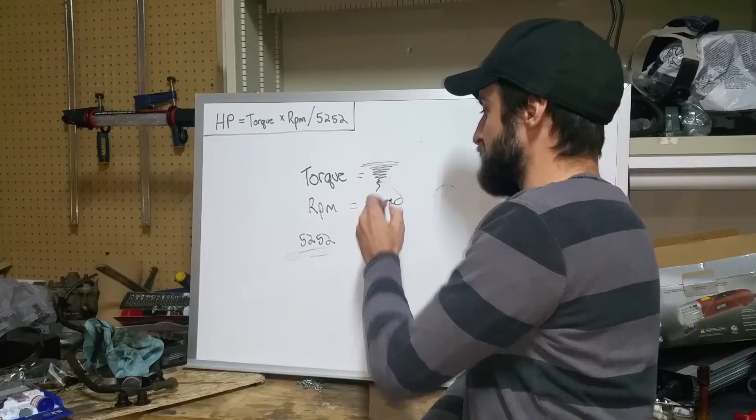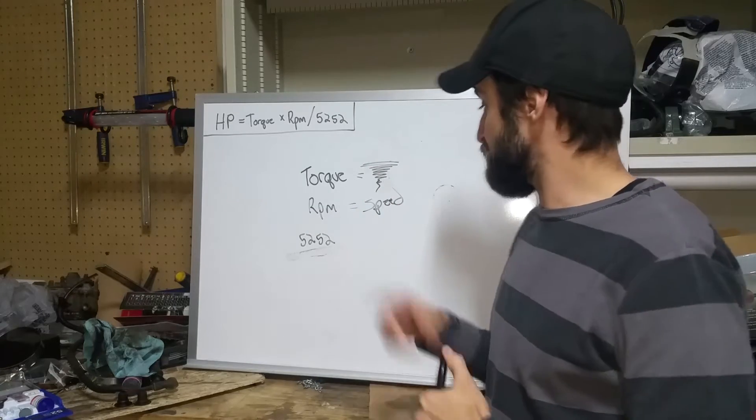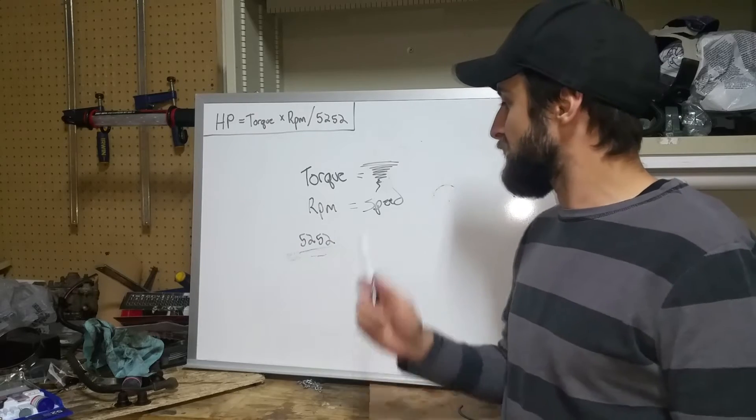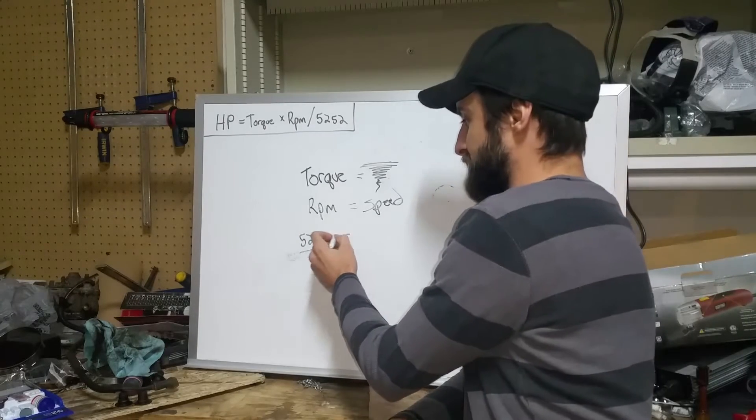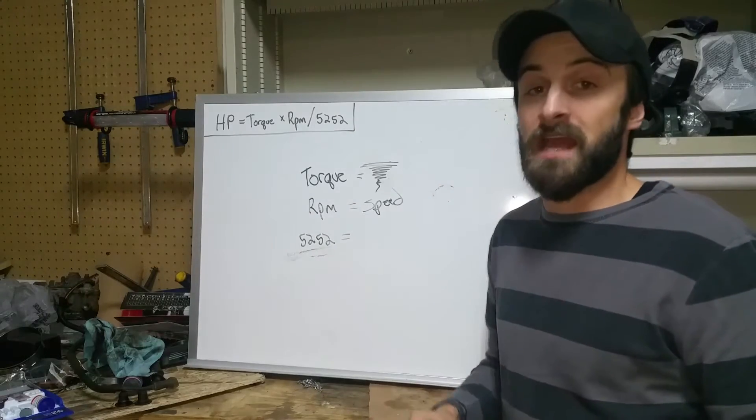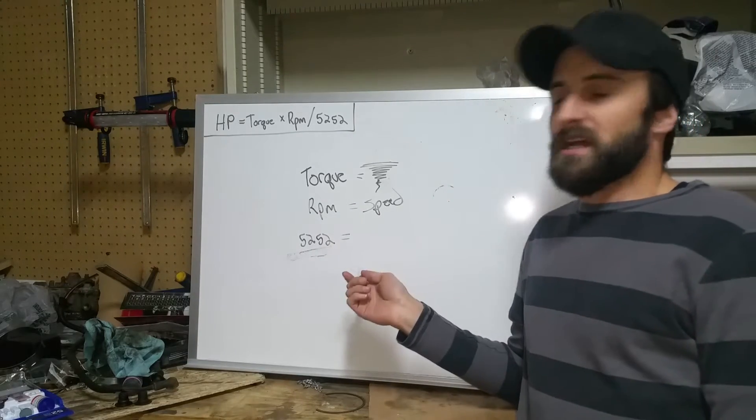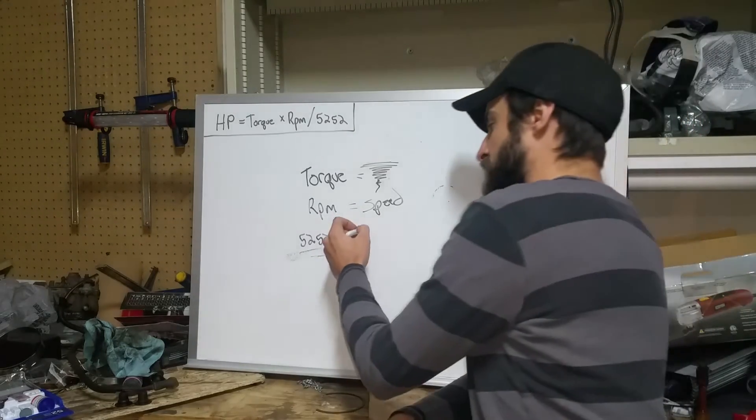And 5252, what is this? This is where the magic happens. 5252, what exactly is this? So I'm just going to go ahead and I'm going to call this a constant. And that is something that's always going to remain constant, and I'll show you where that calculation comes from.